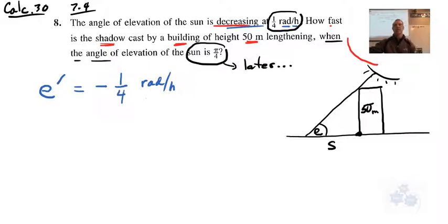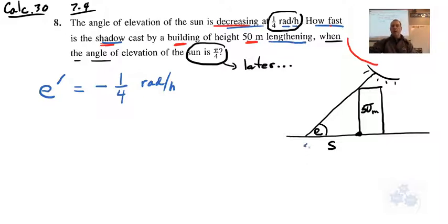There's another rate in here: how fast is the shadow cast by the building lengthening? The shadow is lengthening over time, so that's the rate of change of the length of the shadow — that's our second rate. Related rates — two rates. That second rate is unknown, so we put a question mark there.